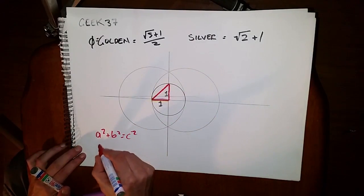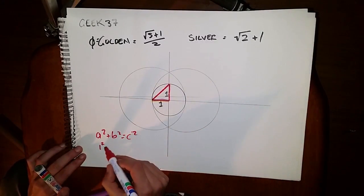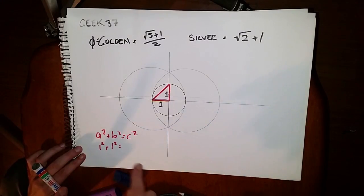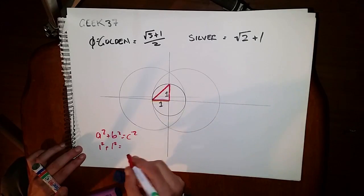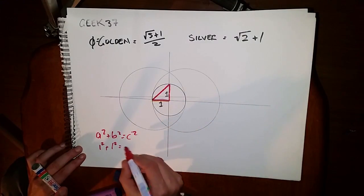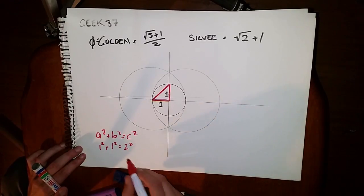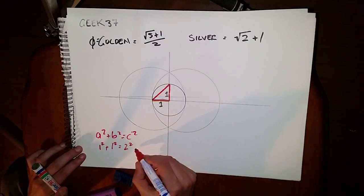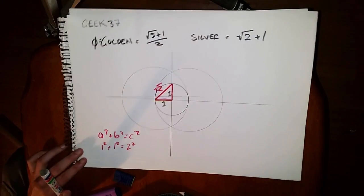So one squared plus one squared equals c squared, and this creates one plus one equals two, therefore the hypotenuse c squared equals two. Because it's squared, therefore the hypotenuse is the square root of two. So therefore this line here is the square root of two.